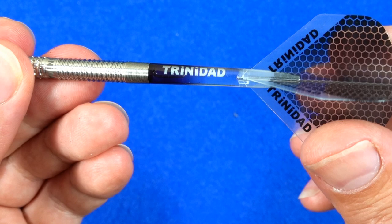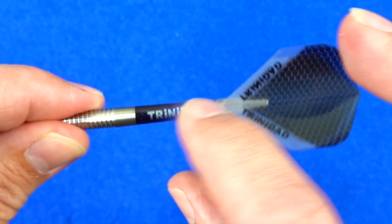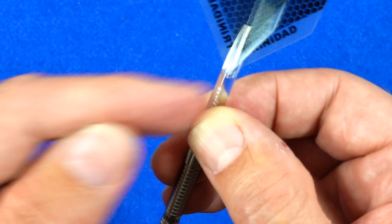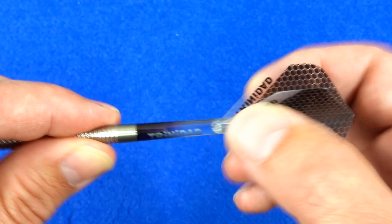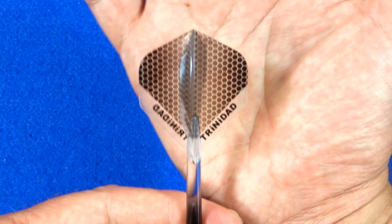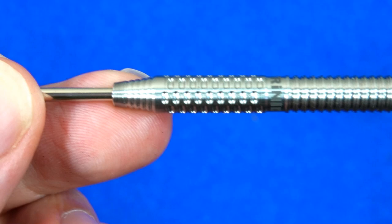And there's the Trinidad in-between stems. I think these are polycarbonate stems, not my favorite kind of stem because I often find that they break quite easily. But these have got quite a nice smooth transition towards the flight there, so hopefully may not catch the point as much. And there's the Trinidad standard shape flights, kind of a see-through design.